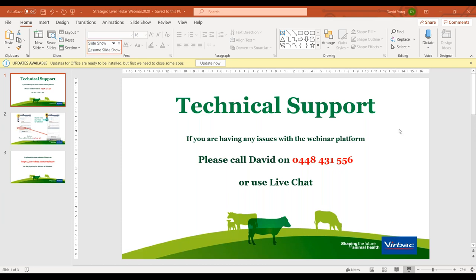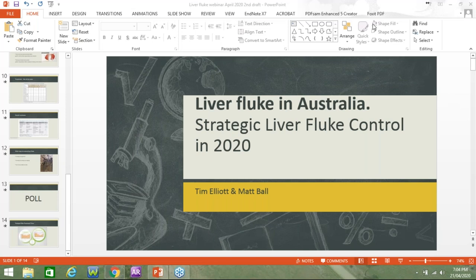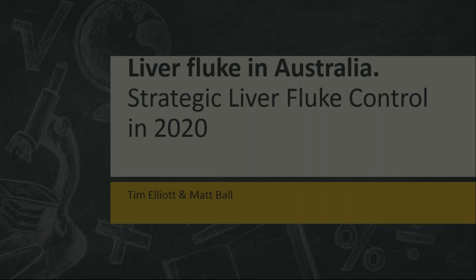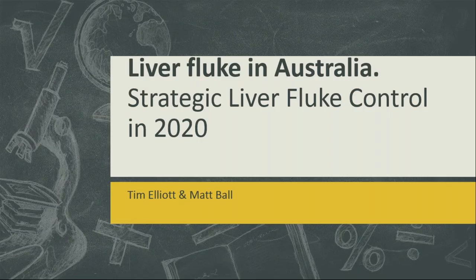Now that we know a little bit about everyone here tonight, I'd like to introduce our first speaker, Dr. Tim Elliott. Tim is a large animal scientist currently living in Armidale with experience in sheep and beef cattle farming and a particular interest in animal parasitology and drug resistance. He has worked with universities, vets, government departments, and pharmaceutical companies in Australia and abroad. Tonight Tim's presentation will look at what strategic liver fluke control means in 2020.